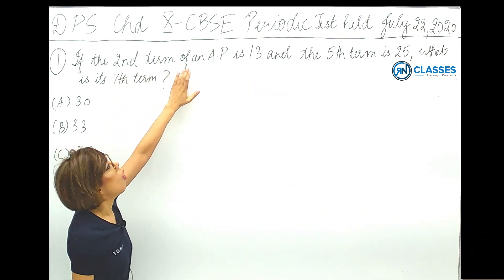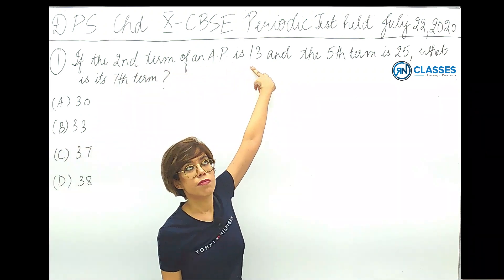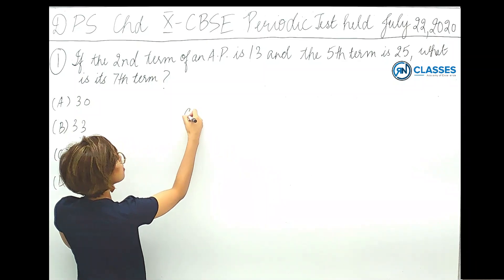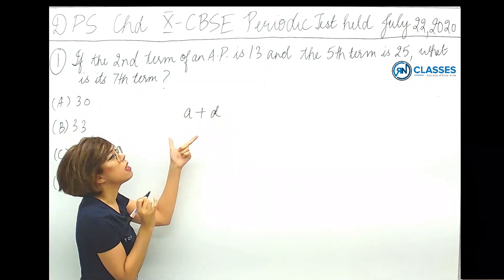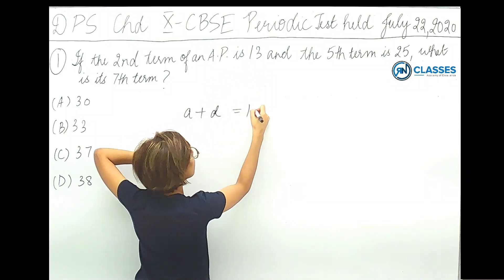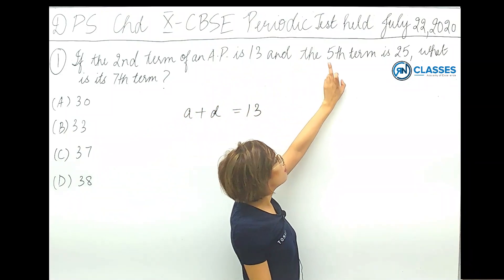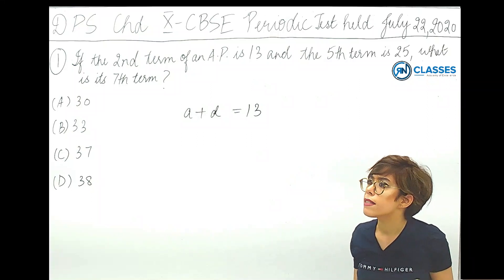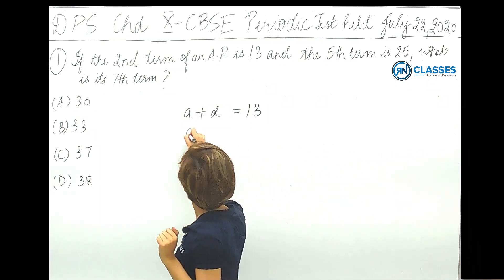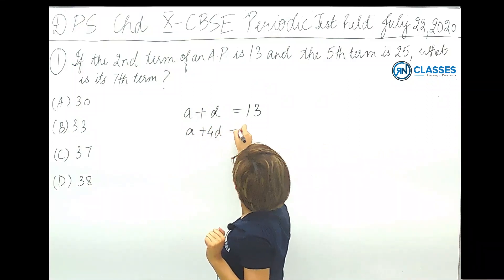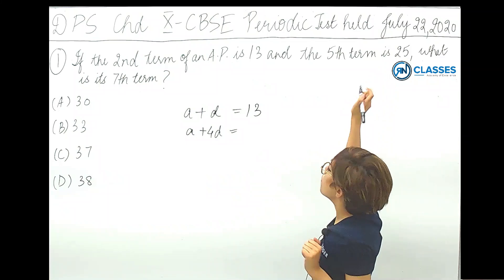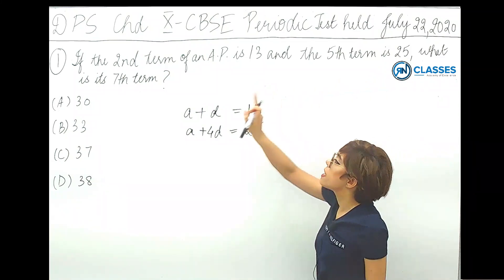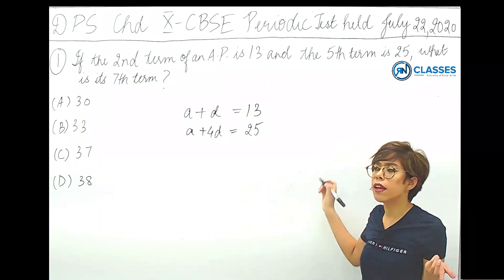The first question: if the second term of an AP is 13, so second term is a plus d equal to 13, and the fifth term is 25, so a plus 4d equals 25. We need to find the seventh term, which means finding a plus 6d.